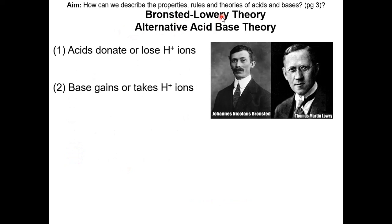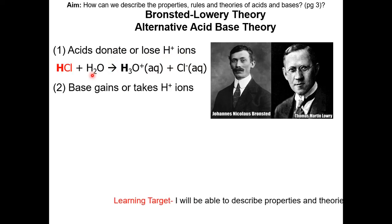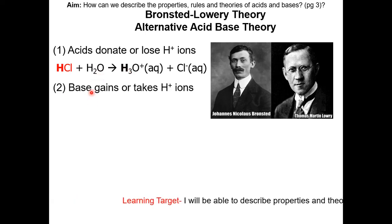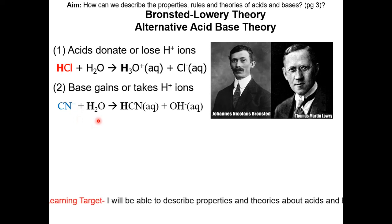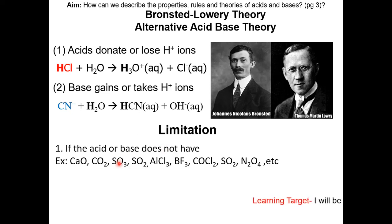The second theory is the Brønsted-Lowry theory — sometimes on the Regents they call it the alternative acid and base theory. There are two points. First, acids donate or lose hydrogen ions. In this example, HCl is an acid — it donates a hydrogen ion to water, forming hydronium. Second, a base gains or takes hydrogen ions. In this equation, CN⁻ is a base and it takes a hydrogen ion from water.